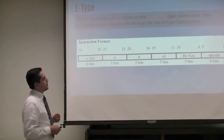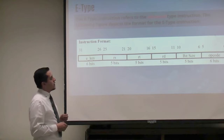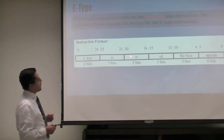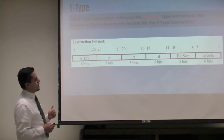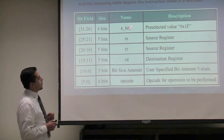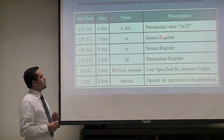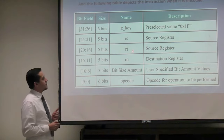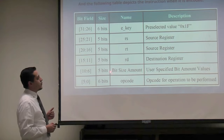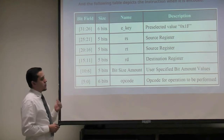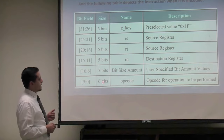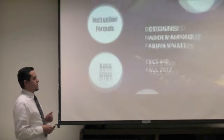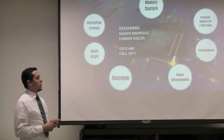Here is our addition to the baseline — the enhanced type instruction. The E opcode is a pre-selected value 1F. We use two register sources, one destination, each one 5 bits. Here is 5 bits for a bit size amount, which is specified by the user, and 6 bits at the lowest for the opcode to specify the operation.